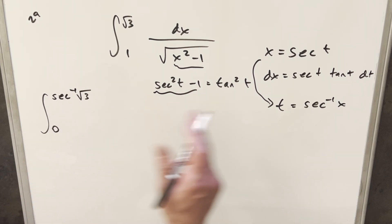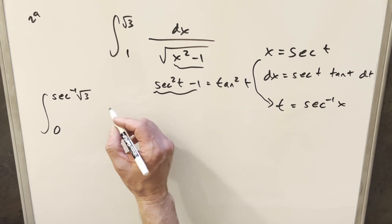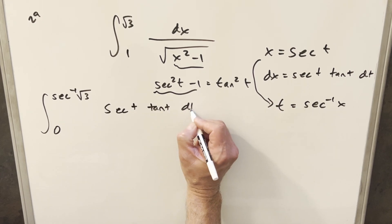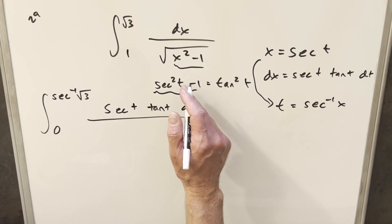That's just because cosine of 0 is 1, and this is just the reciprocal of that, so that's our value there. And then doing all this stuff, our dx value is going to be this. We're going to have secant t tan t dt, and then here we're going to have, like I said before,